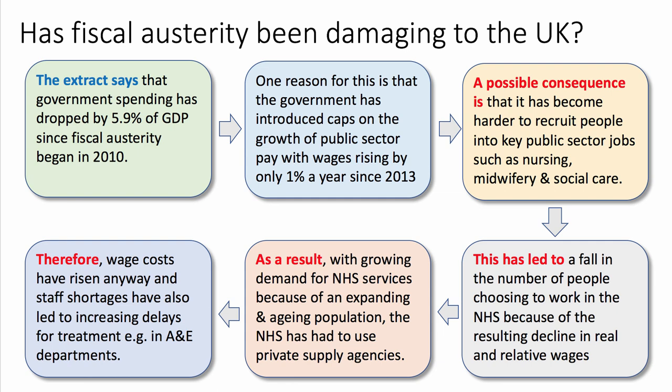The contrasting view can also be developed using a chain of reasoning. Starting with an extract application to get some marks: the extract says government spending has dropped by nearly six percent of GDP since austerity began in 2010. One reason is the government introduced caps on the growth of public sector pay, with wages rising by only one percent a year since 2013. A possible consequence of that — a connective phrase — is that it has become harder to recruit people into key public sector jobs such as nursing, midwifery, and social care.